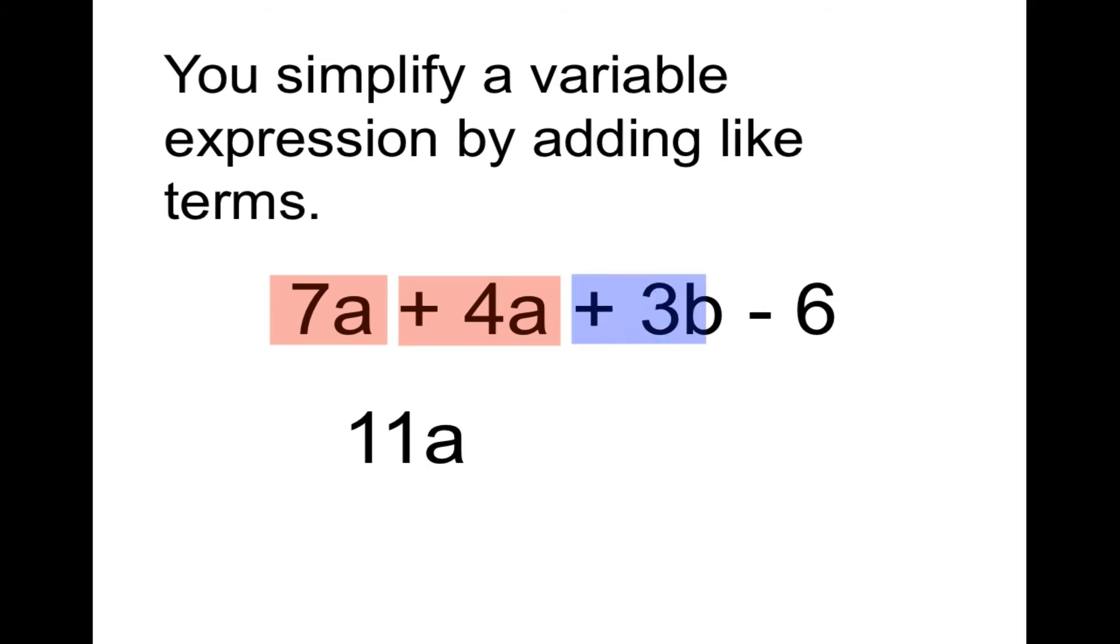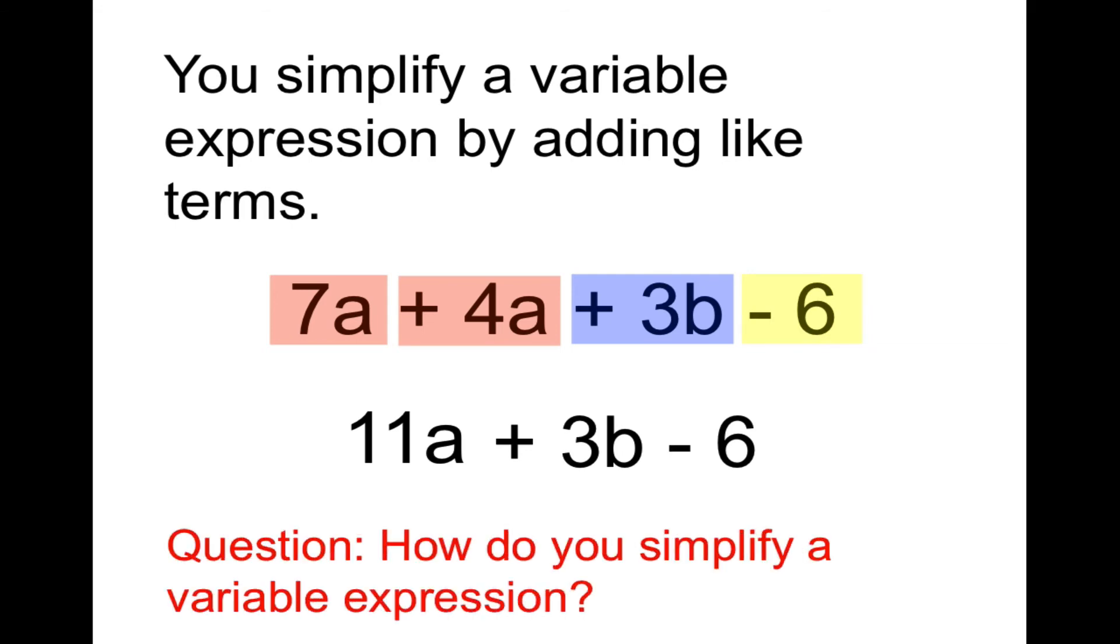Is there anything like 3b? No, so we have that. Is there anything like minus 6? No. I've highlighted those different colors. The final answer is a trinomial: 11a plus 3b minus 6. None of those are like each other, so they can't be combined. The question for this is: how do you simplify a variable expression? Simplify a variable expression by adding like terms.